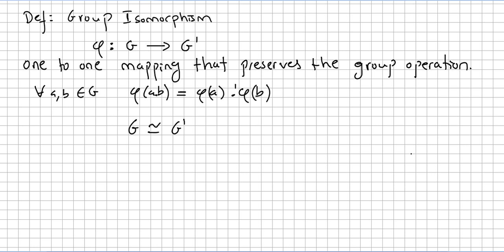This is the second video on group isomorphisms. We define again what a group isomorphism is. An isomorphism phi from group G to group G-prime is a one-to-one mapping or function from G to G-prime that preserves the group operation. This means for all A and B in G, phi of A operation B equals phi of A operation-prime phi of B.